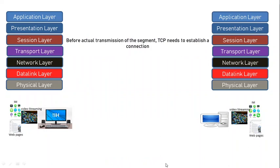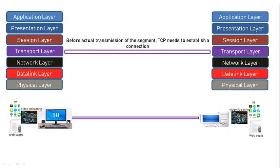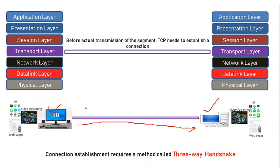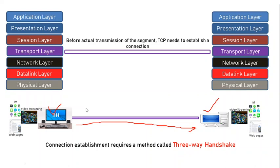The transport layer's job is that before the actual transmission of the segment, TCP needs to establish a connection between the nodes. For example, these are two nodes — two computers — and TCP needs to establish this connection before the actual transmission of the data packets.